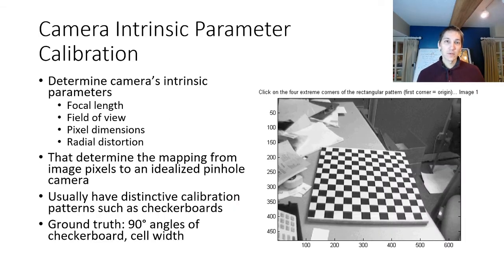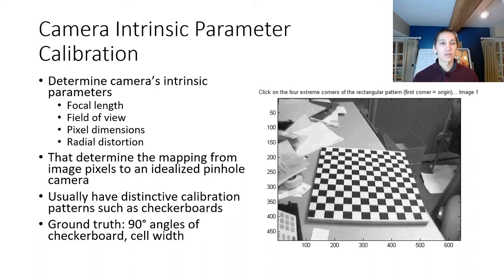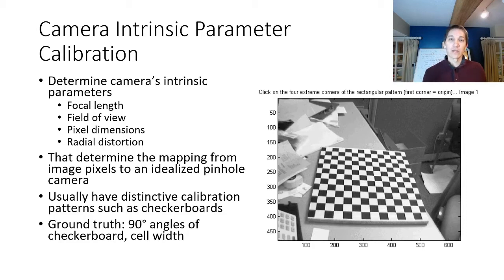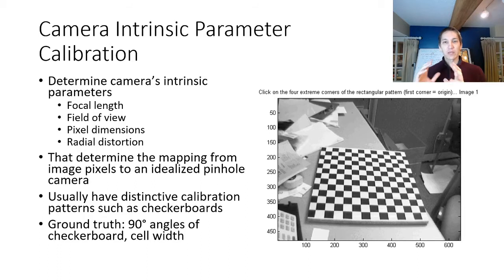As examples of calibrations we'd like to perform for cameras, the first is intrinsic parameter calibration. The intrinsic parameters of a camera include the focal length, field of view, and dimensions of pixels — some pixels are non-square in many image sensors. There's also radial distortion caused by lensing. The purpose of these intrinsic parameters is to map from image pixels to the model of an idealized pinhole camera, which we talked about last lecture.